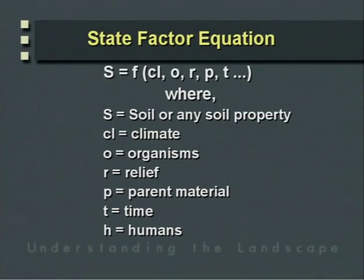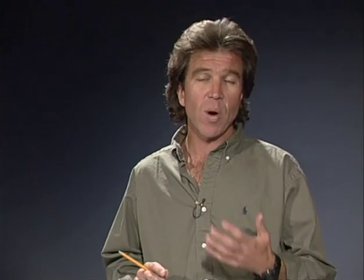Jenny expresses a mathematical relationship between soil and the state factors of soil formation: climate, organisms, relief, parent material, and time — all symbolically expressed in this equation. The equation allows us to assess the variation in any of these conditioning variables and its impact on any specific soil property or ecosystem property. The application of state factor theory is something we'll address in the first part of this lecture.